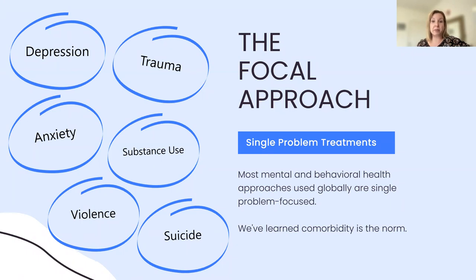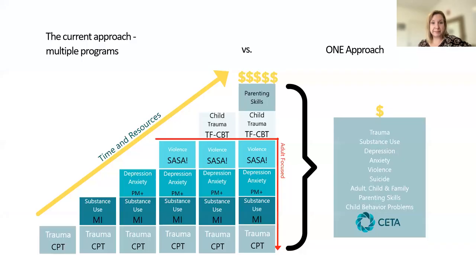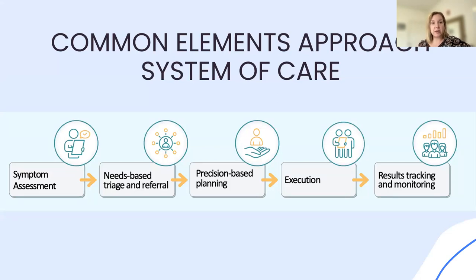What happens with a siloed approach is that for a population to heal — a population faced with all of these different symptoms and problems — you'd have to train and scale up a range of different mental and behavioral health treatments, which is often not feasible and definitely costly. One solution to silo busting is the Common Elements Treatment Approach, or CETA. CETA is a modular and flexible treatment that can address multiple problems — not just one or two, but a range of different problems across the lifespan: trauma, depression, anxiety, violence, behavioral problems in children, parenting skills, relationship problems, and hopefully soon, CBT for psychosis.